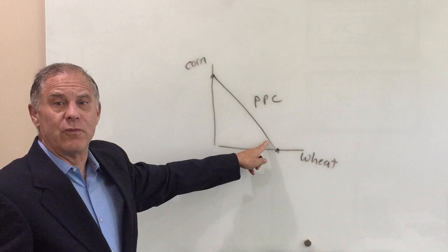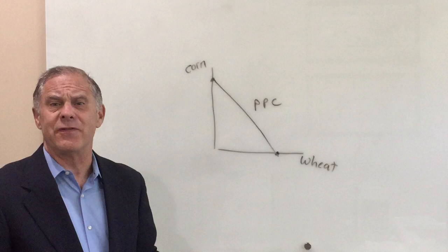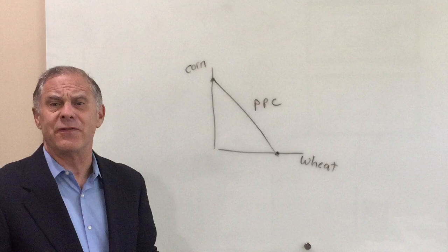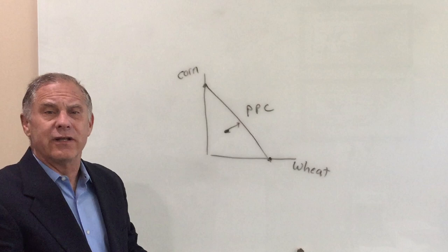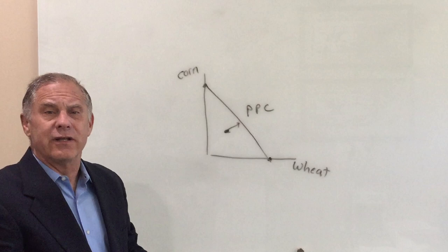If he uses all his land, that's how much he can grow. If he uses less than all his land, maybe he leaves some of his land fallow and unplowed, then he's in here. He could plant more and go out there and use more land. Now, let's move from the farmer to a different concept.